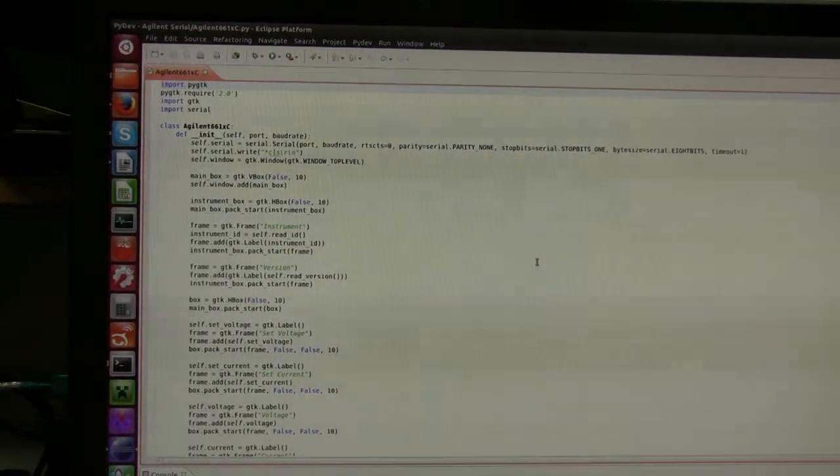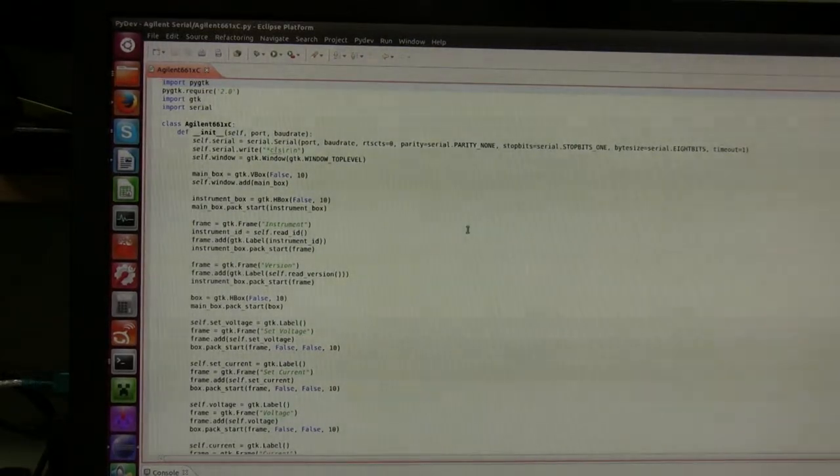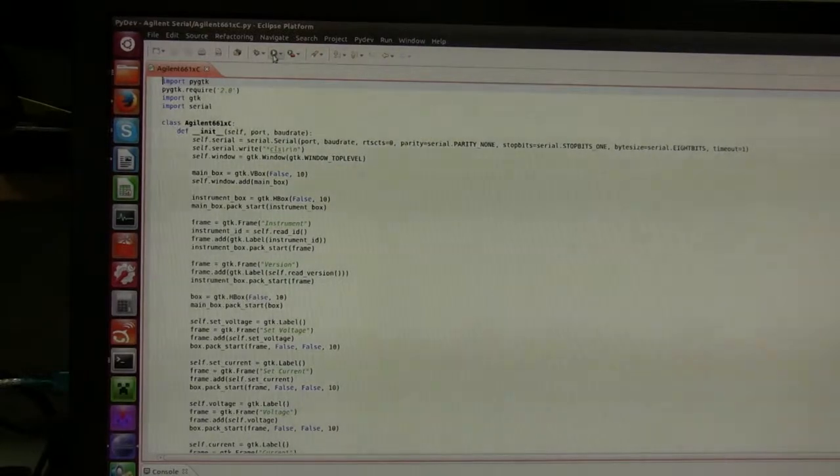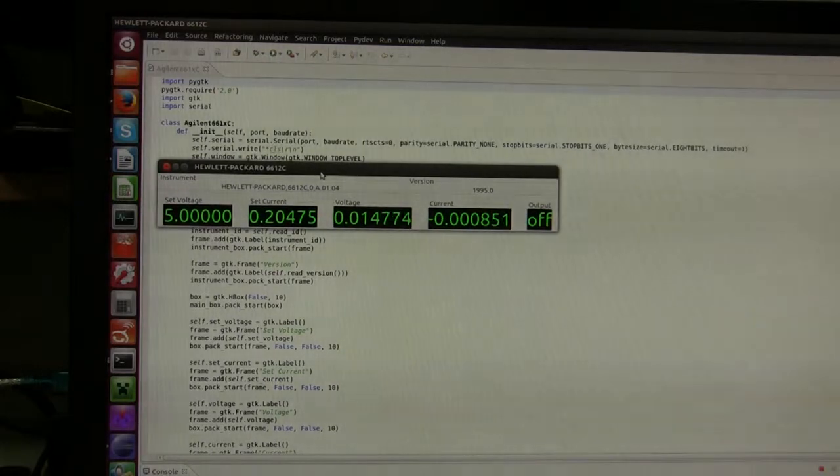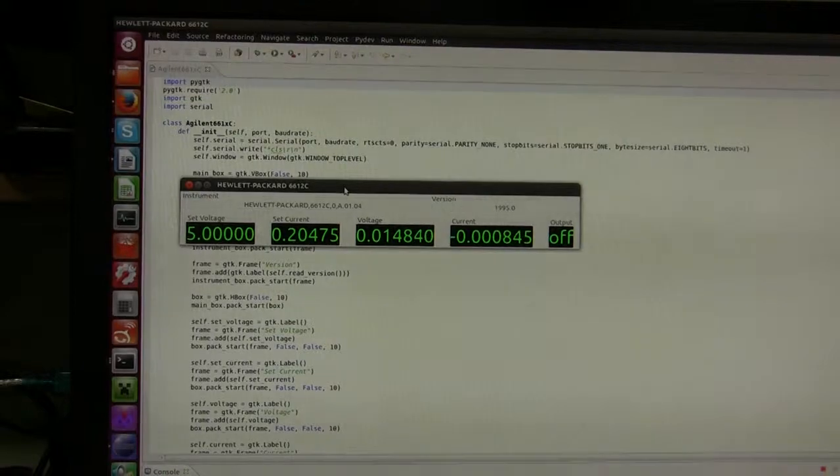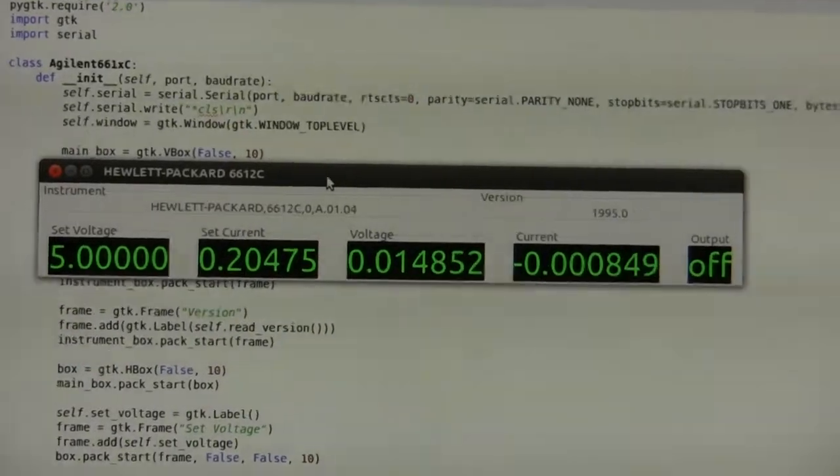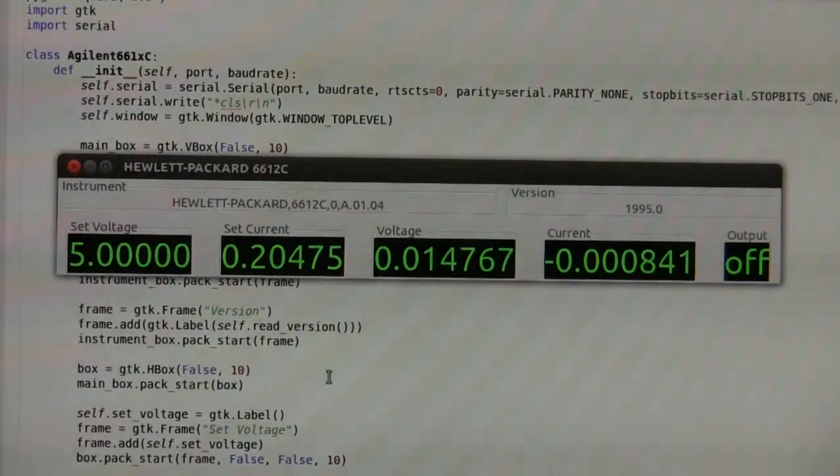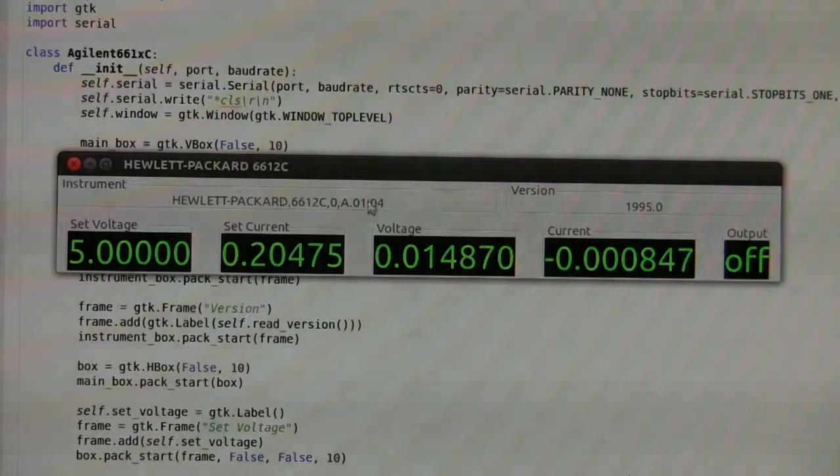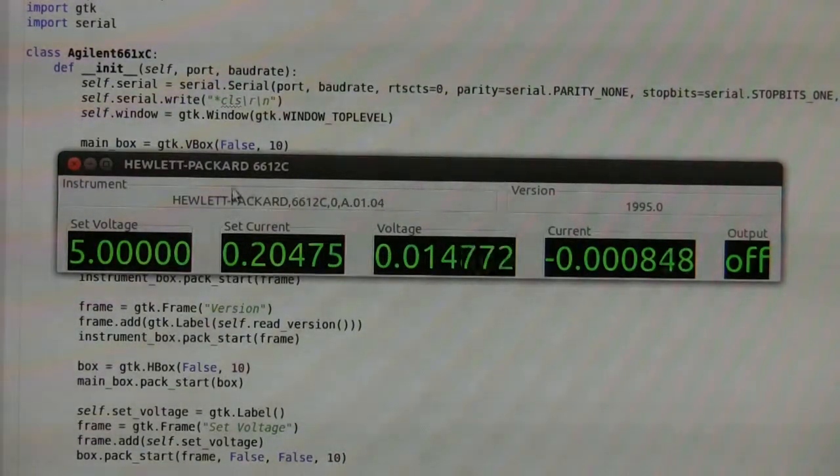Here I wrote a little piece of code in Python language using GTK graphics library. Well, let me start it. There you go, here's the little window showing the information about the power supply. Okay, let me zoom in. All right, so that's really simple for now. First I printed ID of the instrument here and version - that's done only once.